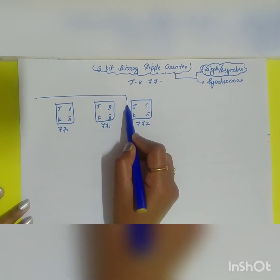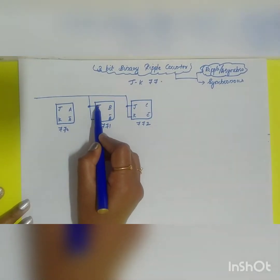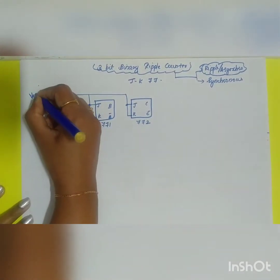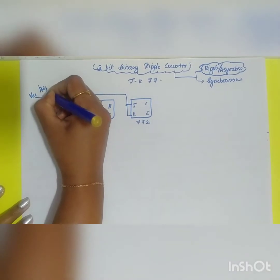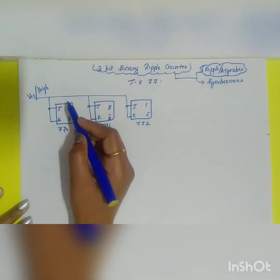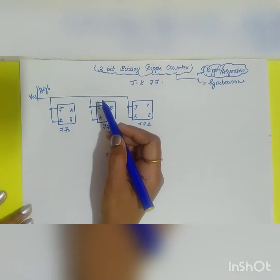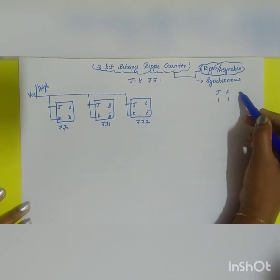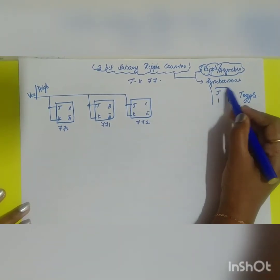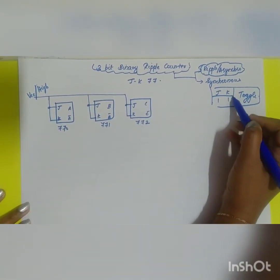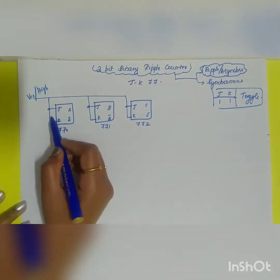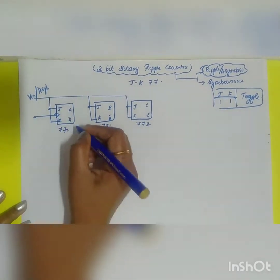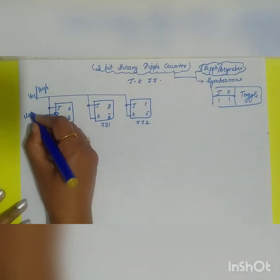The J and K inputs are shorted together and connected to VCC — that is, they are held high. The reason is that the flip-flop works only in the toggling state, which is when J = K = 1. The clock signal is applied to the first flip-flop, flip-flop 0, which is also taken as your LSB.